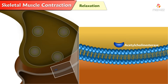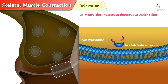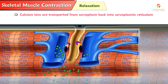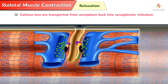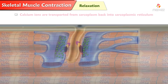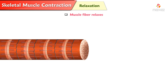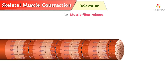Relaxation. Acetylcholinesterase is an enzyme present in the neuromuscular junction. It immediately destroys acetylcholine so the motor end plate is no longer stimulated. Calcium ions are transported from the sarcoplasm back into the sarcoplasmic reticulum. Linkages between actin and myosin are broken, and the muscle fiber relaxes.